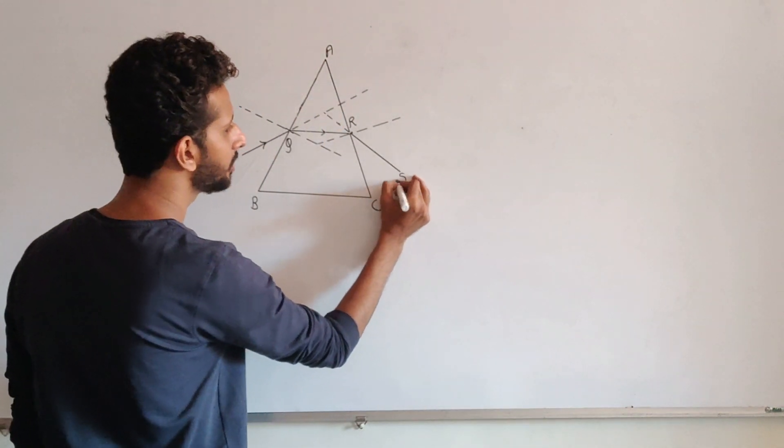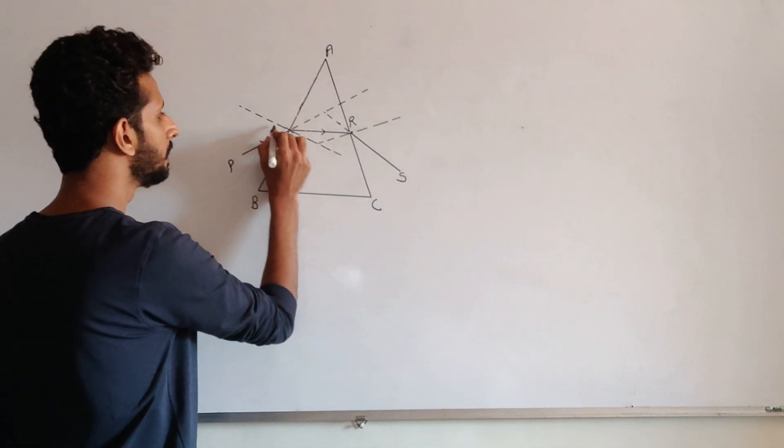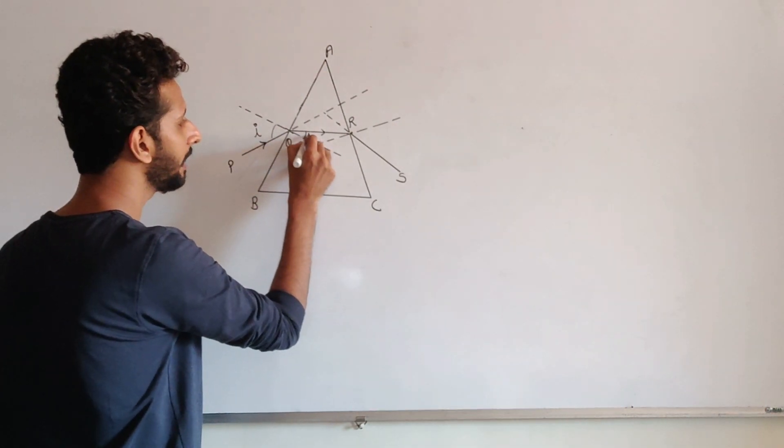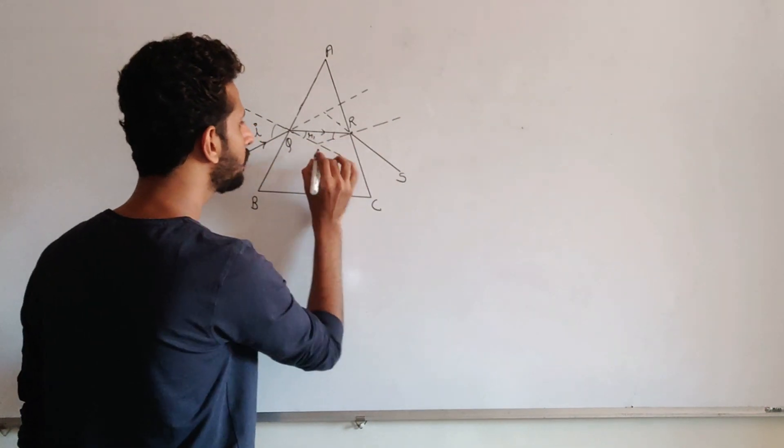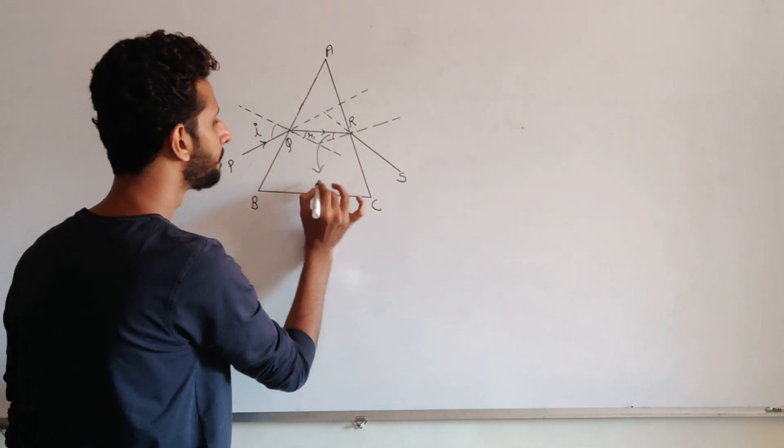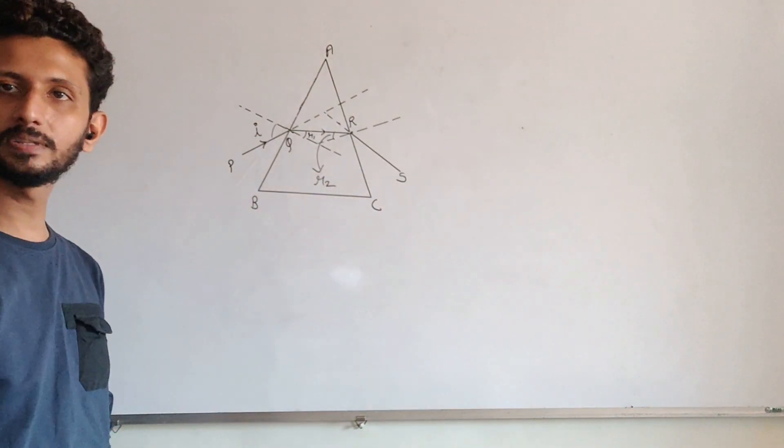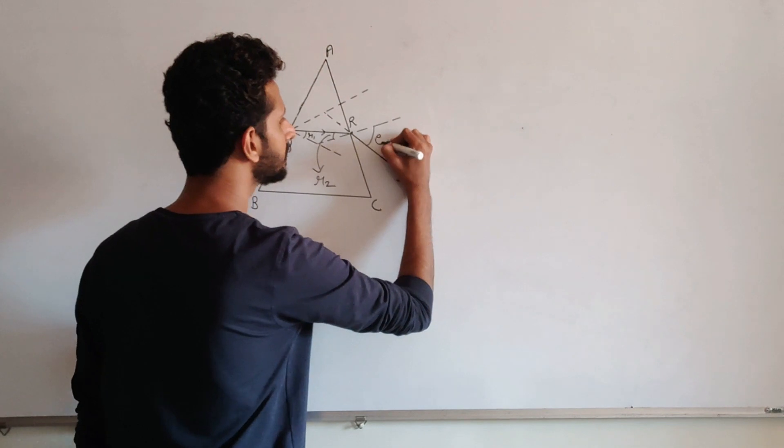So RS is your emergent ray. So in this case, here is your angle of incidence, here will be the angle of refraction, angle of incidence R2 on the surface AC. Second angle of incidence R2 on the surface AC, and angle of emergence E.